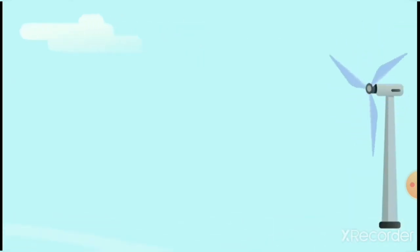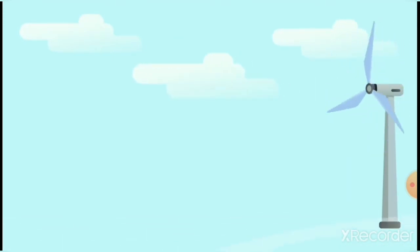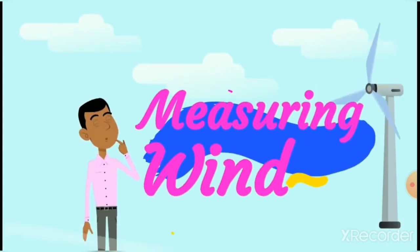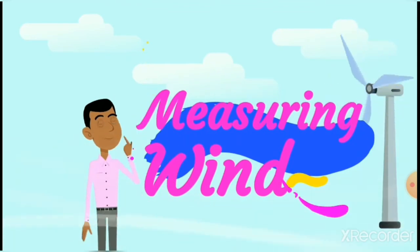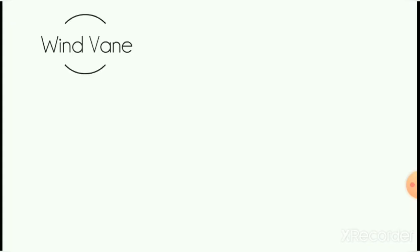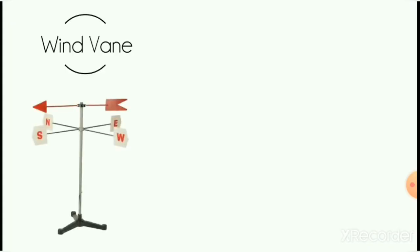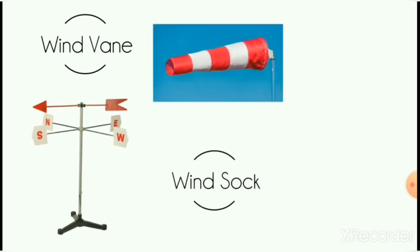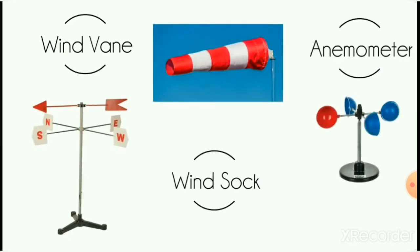We can also measure the speed and direction of the wind using two types of tools. A wind vane is used to measure the direction of the wind, and an anemometer is a tool to measure the speed of the wind.